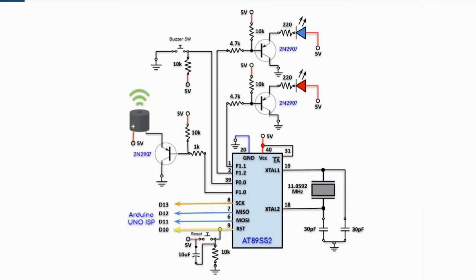In this first example, we have an active buzzer connected to port P1.0, and we have a pushbutton connected to port P0.0, and we have two LEDs connected to ports P1.1 and P1.2. The circuit operates as follows: while the pushbutton is unpressed, the red LED will be on and the blue LED will be off. When we press and hold the button, the buzzer is triggered and the red LED will be off and the blue LED will be on.